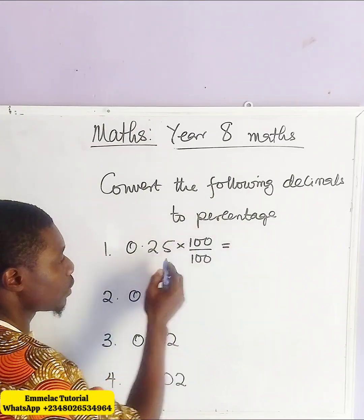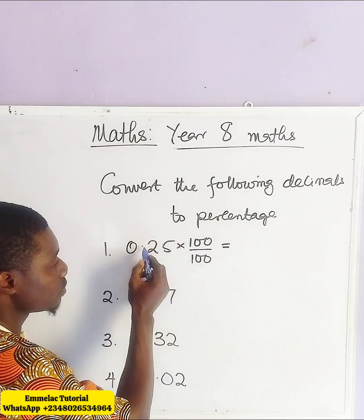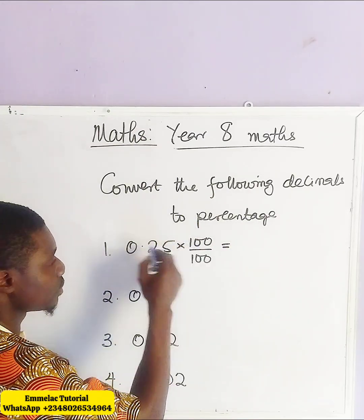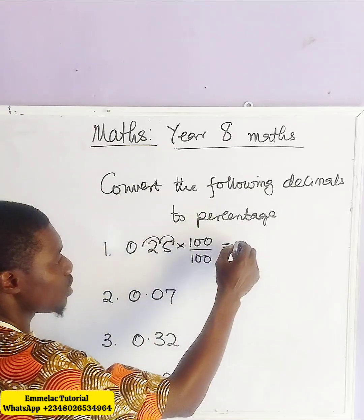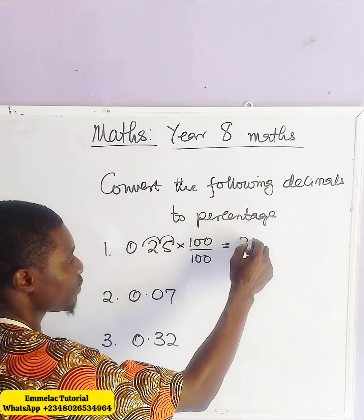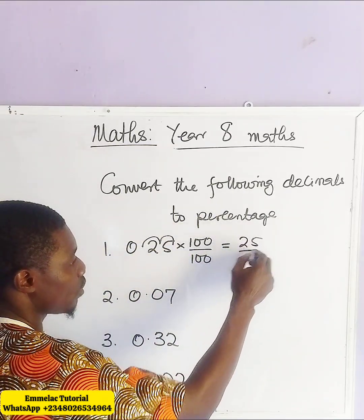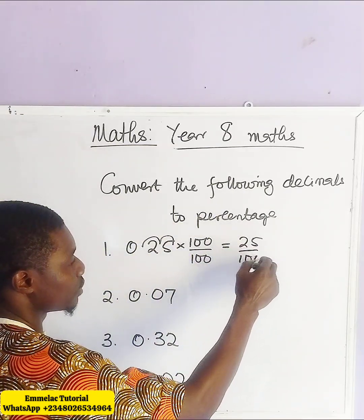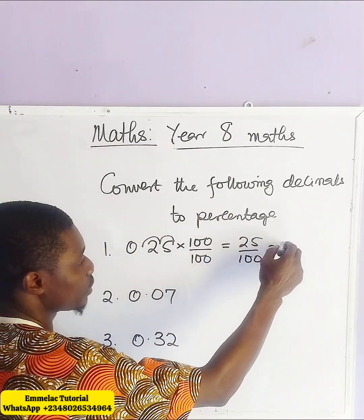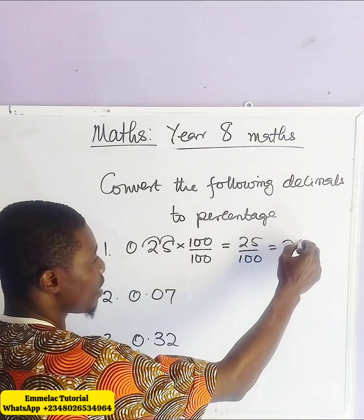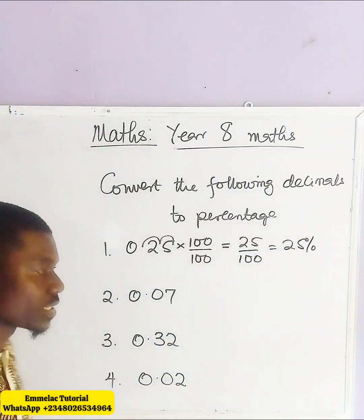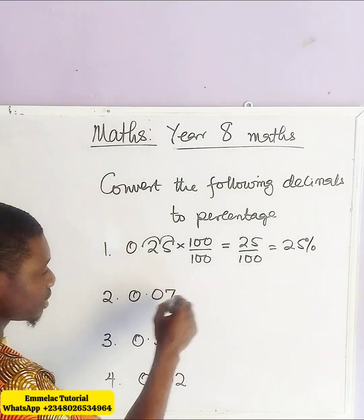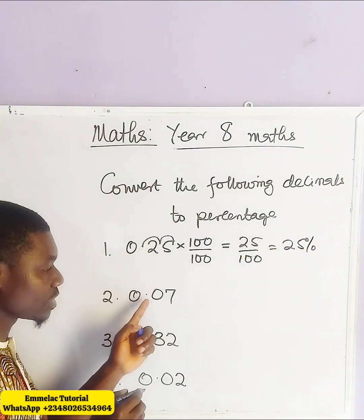Now, because of these two zeros — one, two — you have 25 all over 100, giving us 25%.